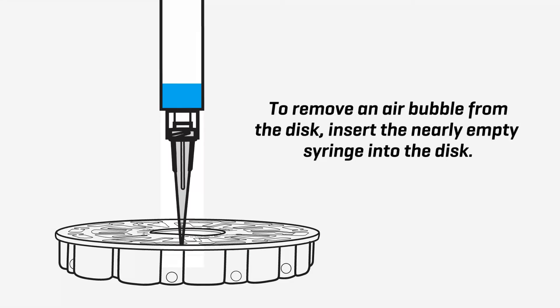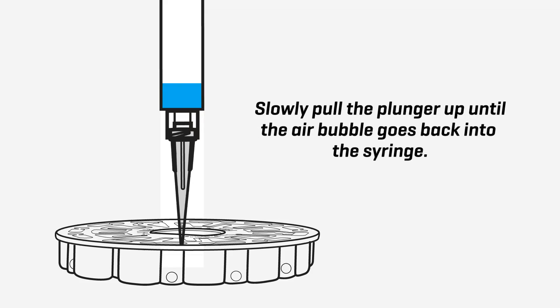To remove an air bubble from the disc, insert the nearly empty syringe into the disc. Slowly pull the plunger up until the air bubble goes back into the syringe.